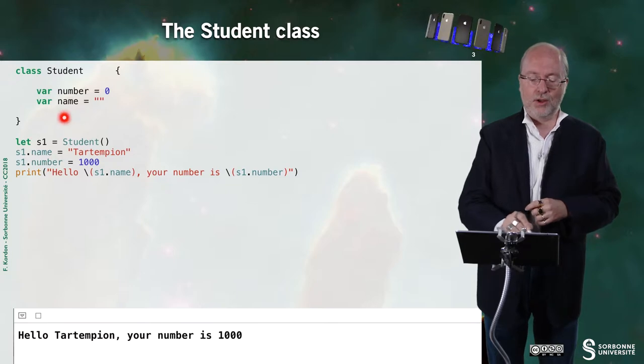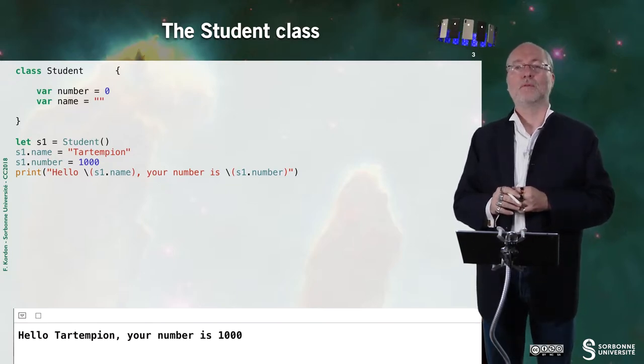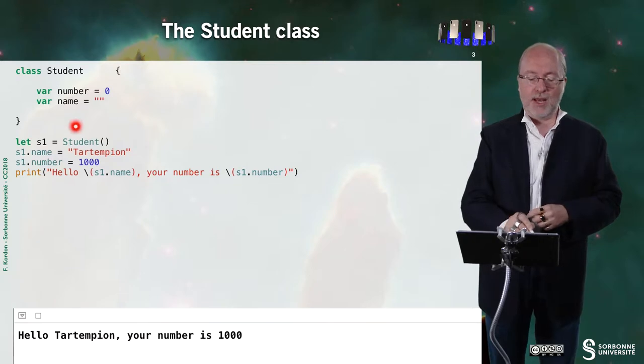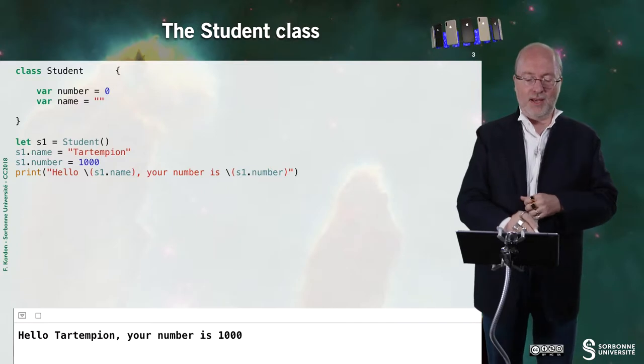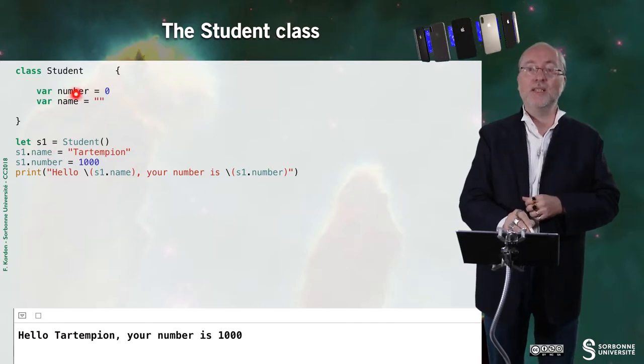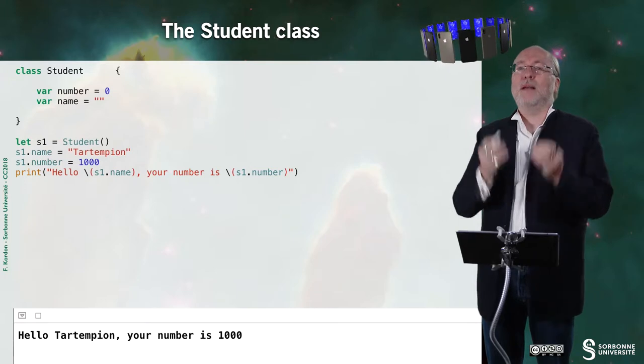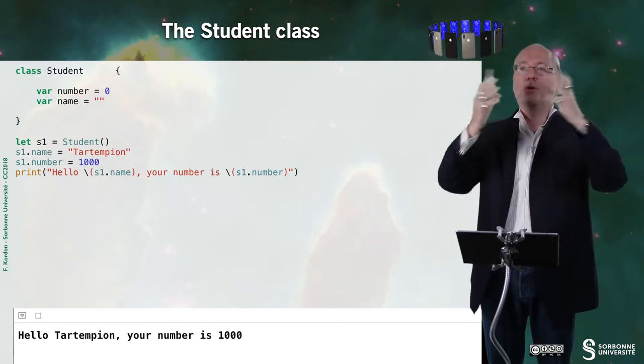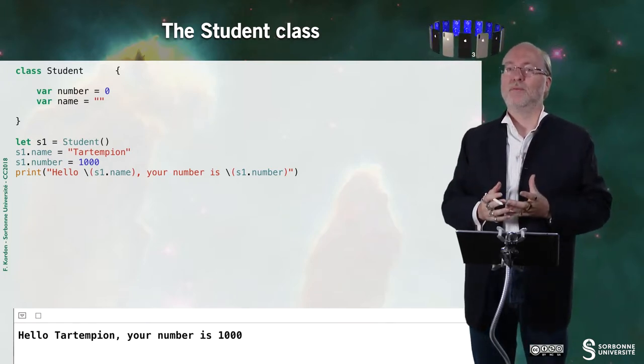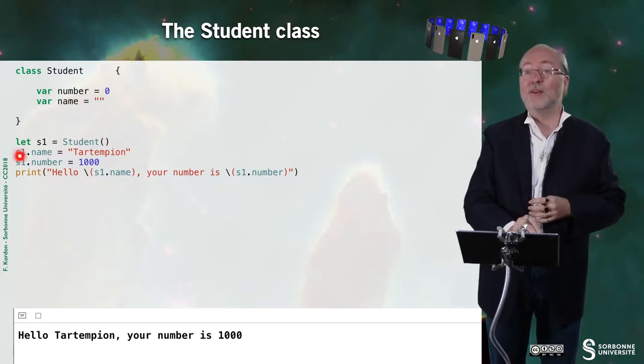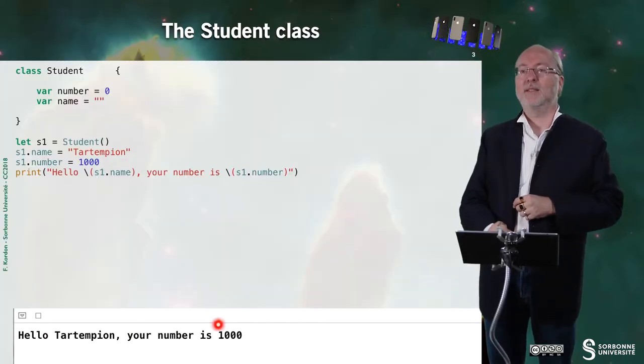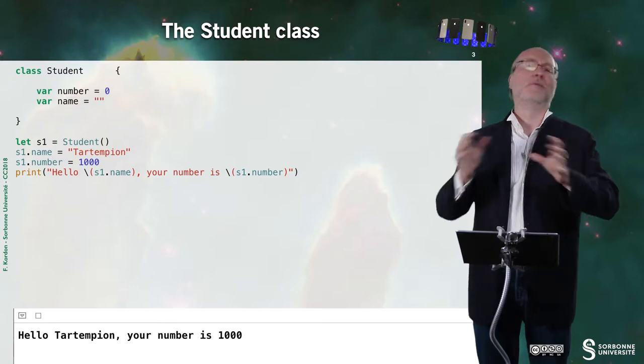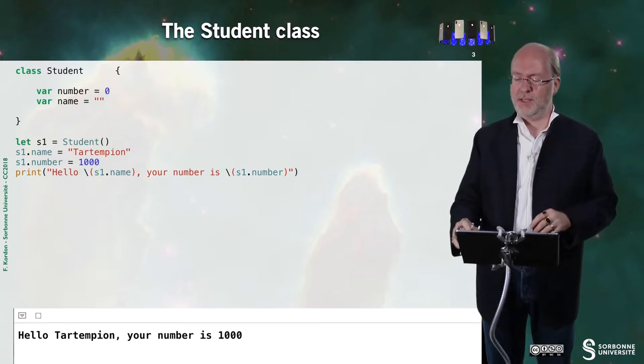And here, here is the minimum student class we can write in Swift. So we just gather a name and a number together. And here we create a new object of class Student. And we access to these properties because by default they are opened to everybody. And here I can access in writing mode. And here I access in read mode. And then I display these. So nothing more. Very, very simple things there.